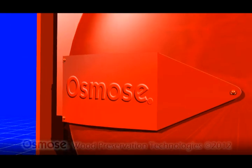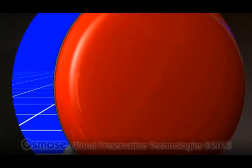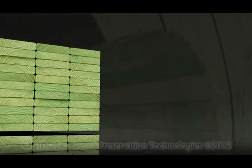Once the final vacuum cycle step is complete, the cylinder door is opened and the pressure treated wood is removed from the treatment cylinder and the process is finished.